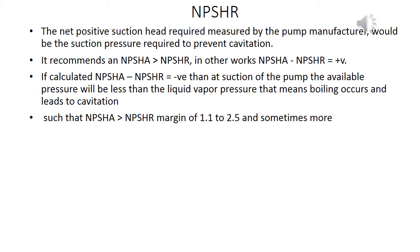The net positive suction head required (NPSHR) is measured by the pump manufacturer and represents the suction pressure required to prevent cavitation. It is recommended that NPSHA be greater than NPSHR. If NPSHA minus NPSHR is positive, conditions are safe. If negative, the available pressure at suction is less than the liquid vapor pressure, meaning boiling occurs and leads to cavitation. A safety margin of 1.1 to 2.5 (or more) is recommended: NPSHA > NPSHR.